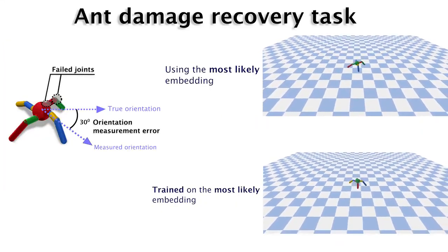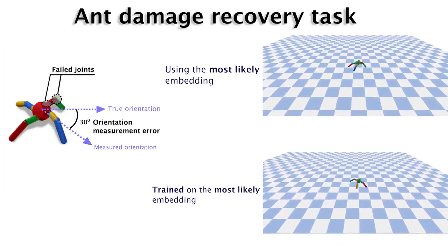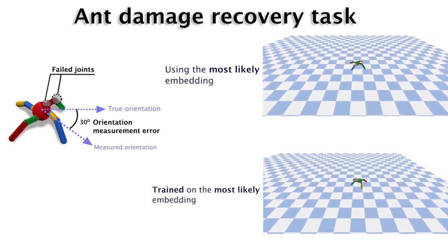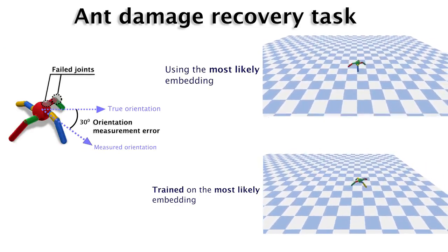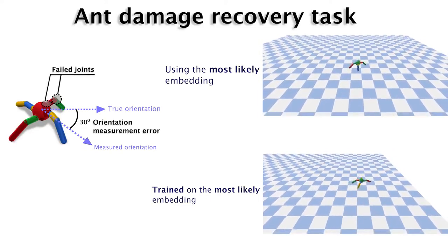Similarly, a simulated ant could recover from a failed joint, as well as a 30-degree error on its orientation estimation, and learn to walk in the forward direction in less than four minutes of interaction.